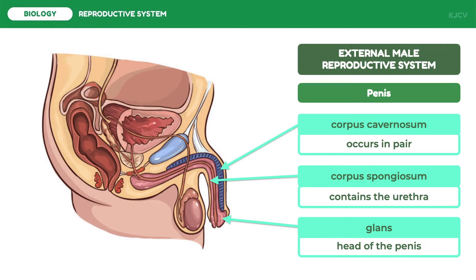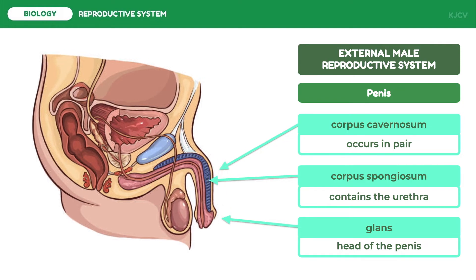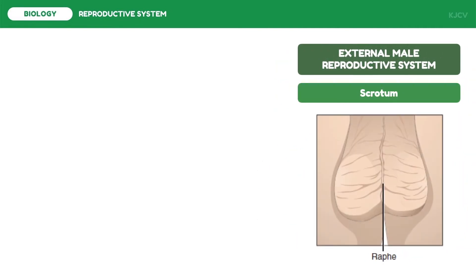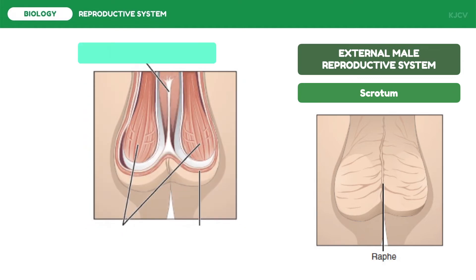Another organ of the external male reproductive system is the scrotum. The scrotum is a reproductive organ which contains layers of skin and is found under the penis. The main purpose of the scrotum is to protect the testes and provide them the right temperature for sperm production and development. The raphe is a region that divides the scrotum into two — the left and the right — and the scrotal septum separates the two testes.